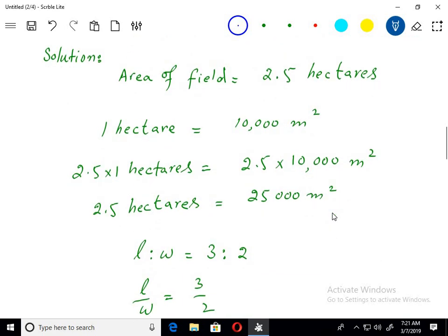Area of the field is given as 2.5 hectares. 1 hectare equals 10,000 meter square. So 2.5 hectares, just multiply 2.5 on both sides, equals 25,000 meter square.